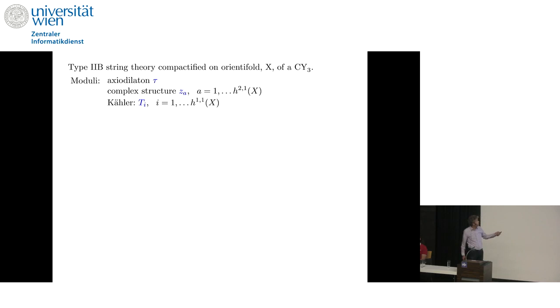So we're working in Type 2B flux compactifications. The moduli that we'll deal with are the axio-dilaton, H21 complex structure moduli, H11 Kähler moduli. And once we've chosen some quantized three-form fluxes, then it's well understood what general form the superpotential takes. It looks like this. The sum of a flux term and a non-perturbative term, where the flux term is the integral of G3 wedge omega, omega the three-zero form.